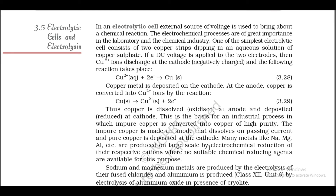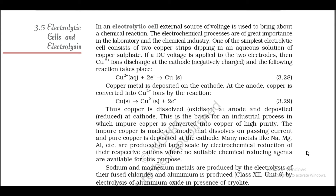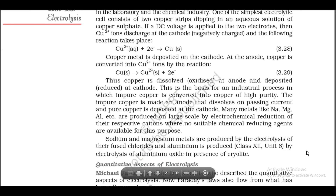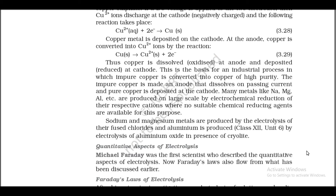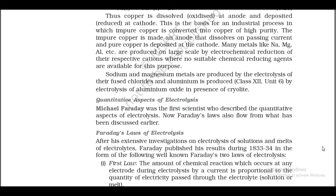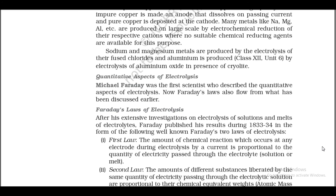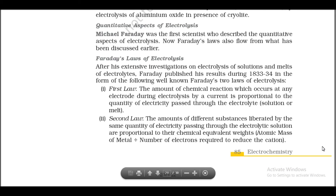Many metals like Na, Mg, Al, etc. are produced on a large scale by electrochemical reduction of their cations where no suitable chemical reducing agents are available. Sodium and magnesium metals are produced by electrolysis of their fused chlorides, and aluminum is produced by electrolysis of aluminum oxide in the presence of cryolite. Michael Faraday was the first scientist to describe the quantitative aspects of electrolysis. After extensive investigation on electrolysis of solutions and melts of electrolytes, Faraday published his research during 1833–34 as Faraday's two laws of electrolysis.